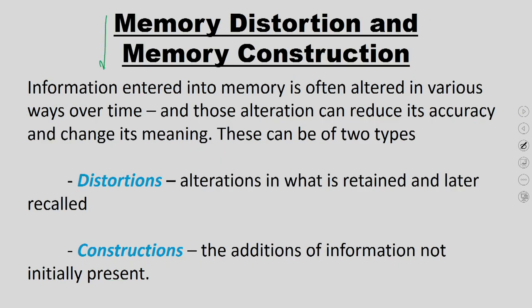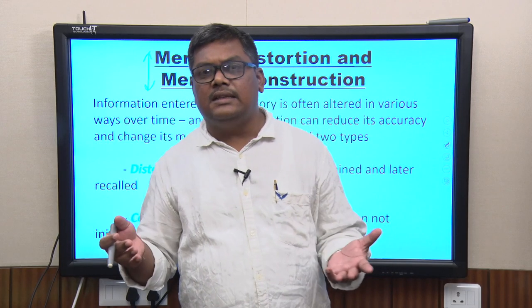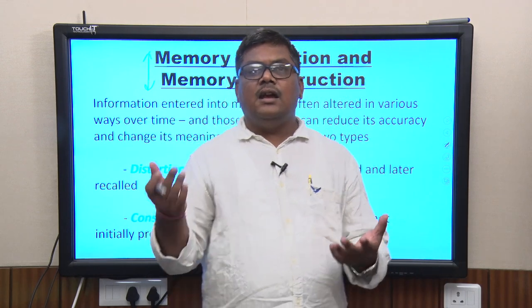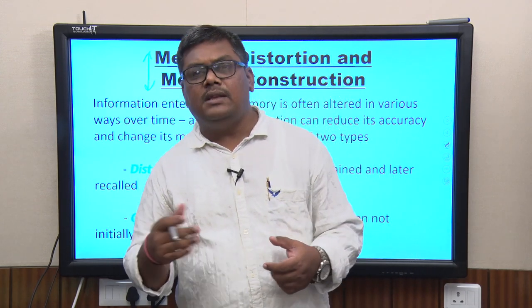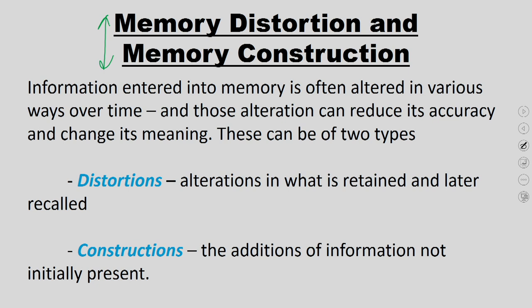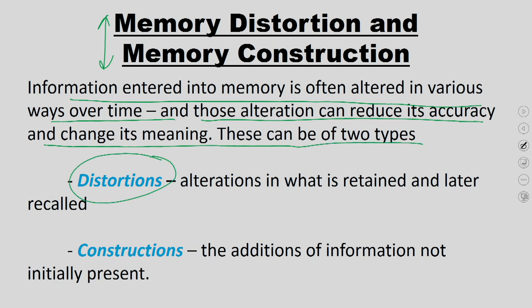Memories are never fully accurate because there is no way to verify exactly what is stored. Memories are subject to personal biases — when looking at a car accident, one's own interpretations influence what is stored. Memories are always open to distortions and constructions. Information entered into memory is often altered over time, which can reduce its accuracy and change its meaning. There are two types: memory distortions (alterations in what is retained and later recalled) and constructions (addition of information to initially present information).